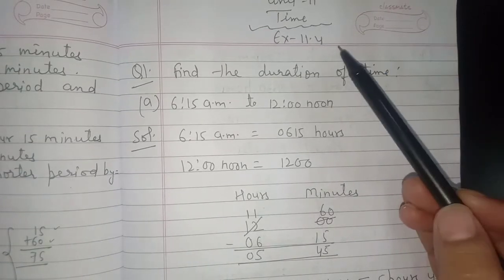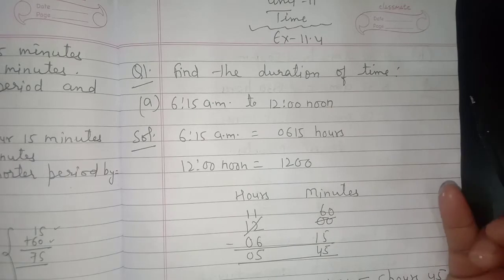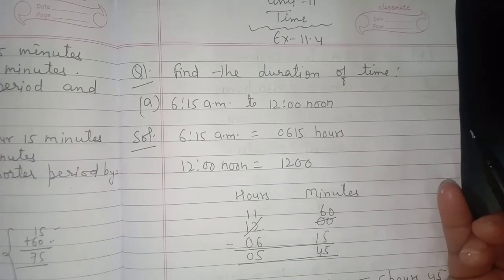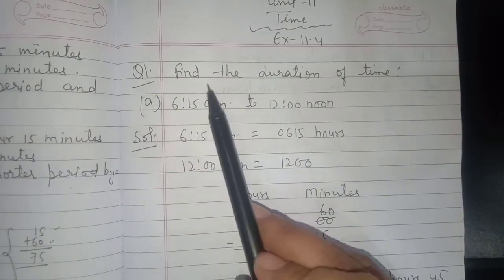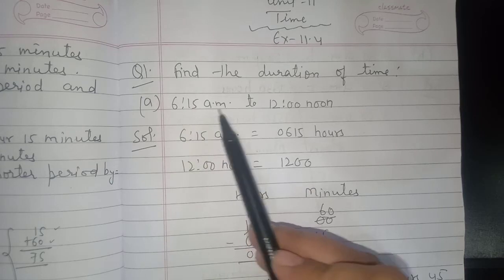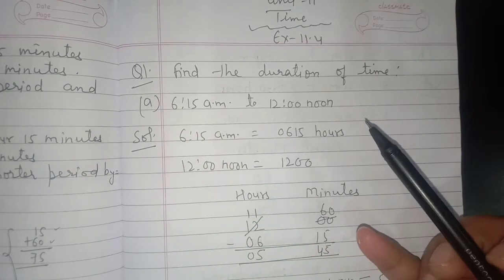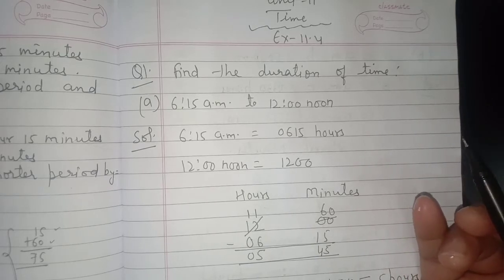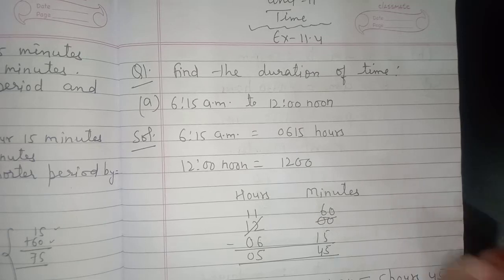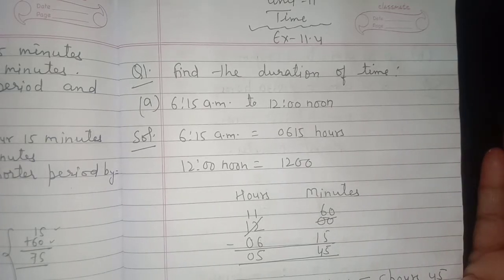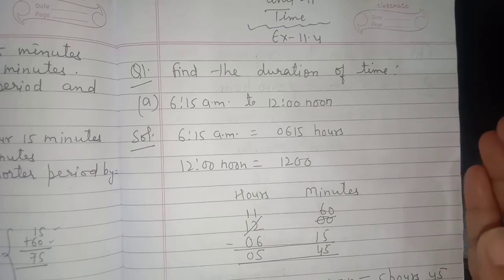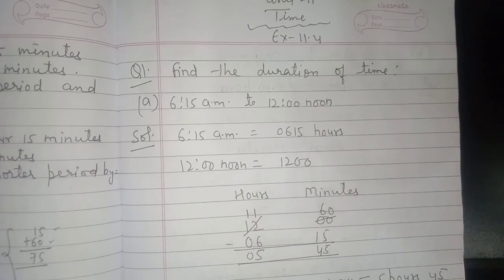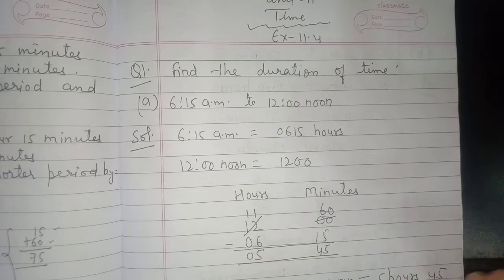Hello everyone, today we will do Exercise 11.4 of Unit 11, that is Time. In this exercise we will be finding the duration of time. To find the duration of time, we need to subtract the starting time from the finishing time, because when you know when the activity began and when it ended, you can subtract to find the duration.